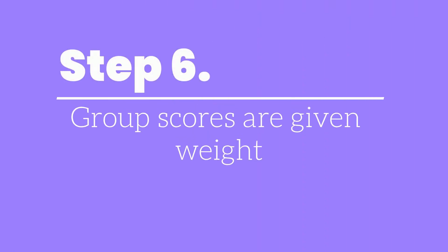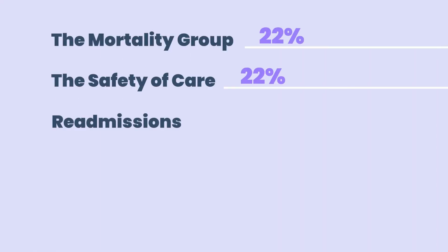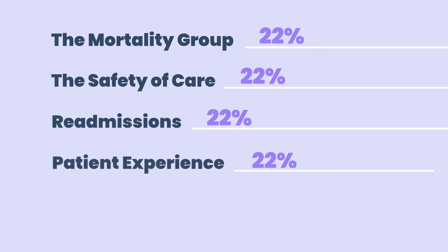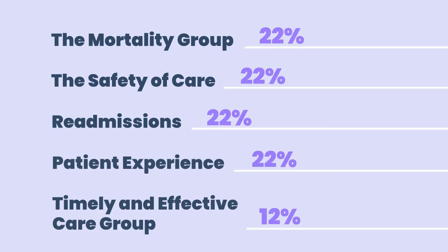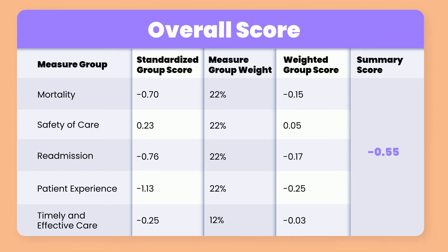Your final score is calculated according to the weight of each group. The Mortality group gets 22 percent weight, Safety of Care is 22 percent, Readmissions is 22 percent, Patient Experience is 22 percent, and the Timely and Effective Care group gets 12 percent. Continuing our example, you see on screen some example group scores, followed by the measure group weights, the weighted group score, and then the overall summary score.